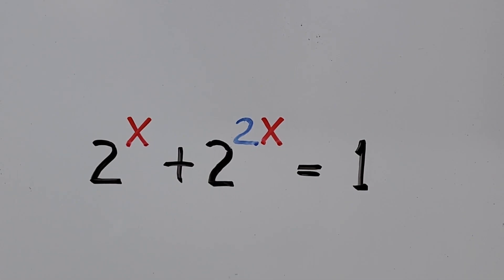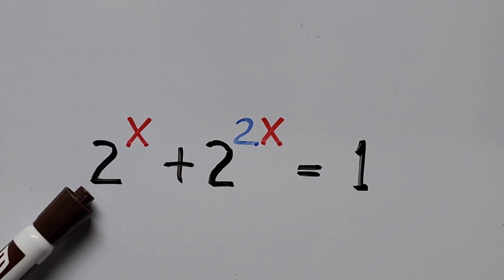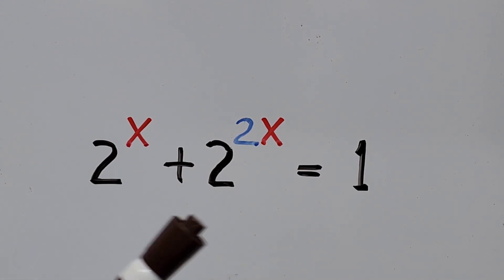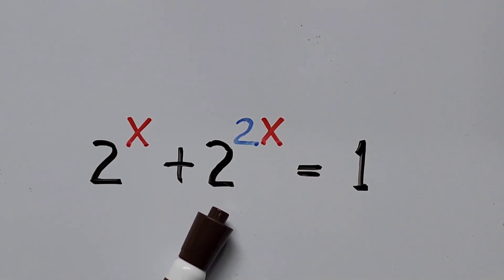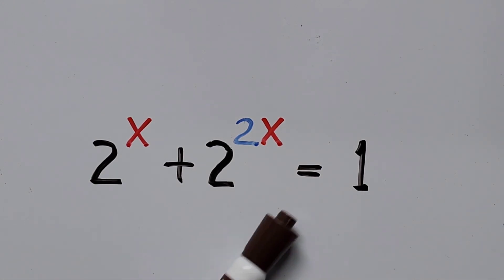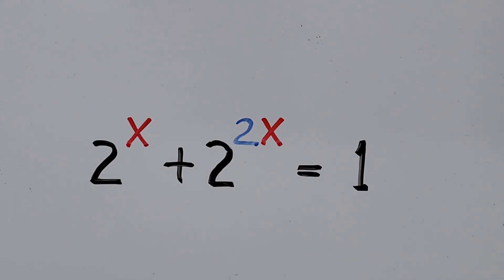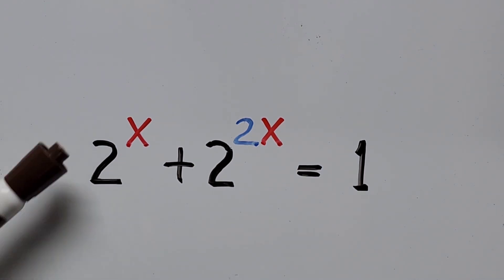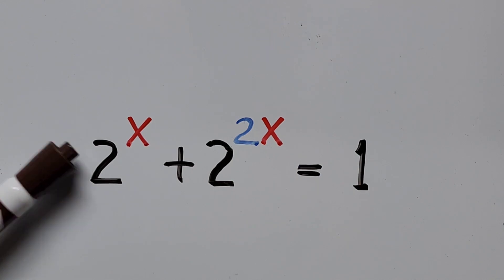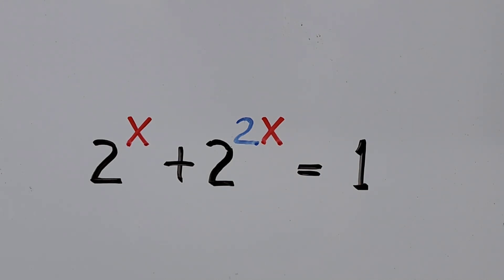Hello everyone! We have here an exponential equation: 2 to the power of x plus 2 to the power of 2x equals 1. And in here, we'll be solving for the real values of x that will satisfy the equation.